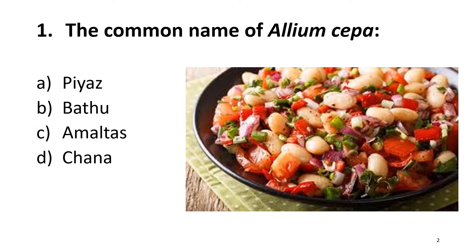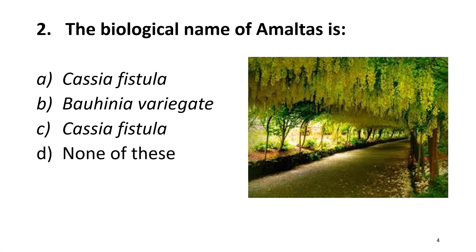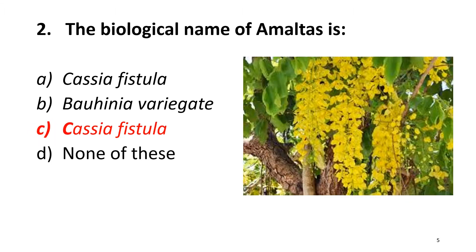Question 1: The common name of Aloe vera. It is a very common one — the answer is alpha, Piyas. Question 2: The biological name of Amaltas is Cassia fistula. The right answer is Charlie.